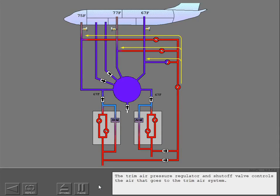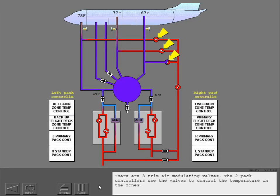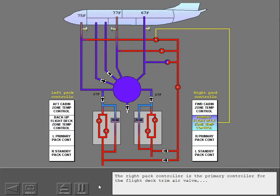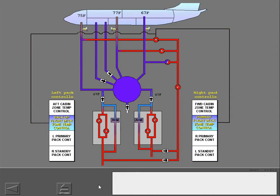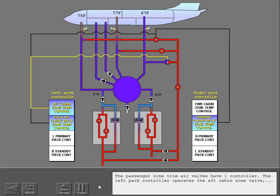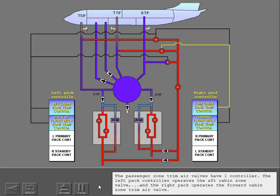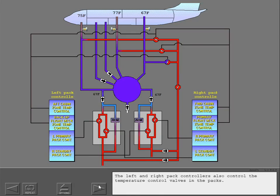The trim air switch controls the trim air regulator and shutoff valve. The trim air pressure regulator and shutoff valve controls the air that goes to the trim air system. There are three trim air modulating valves. The two pack controllers use the valves to control the temperature in the zones. The right pack controller is the primary controller for the flight deck trim air valve, and the left pack controller is the secondary controller. The passenger zone trim air valves have one controller each: the left pack controller operates the aft cabin zone valve, and the right pack operates the forward cabin zone trim air valve. The left and right pack controllers also control the temperature control valves in the packs.